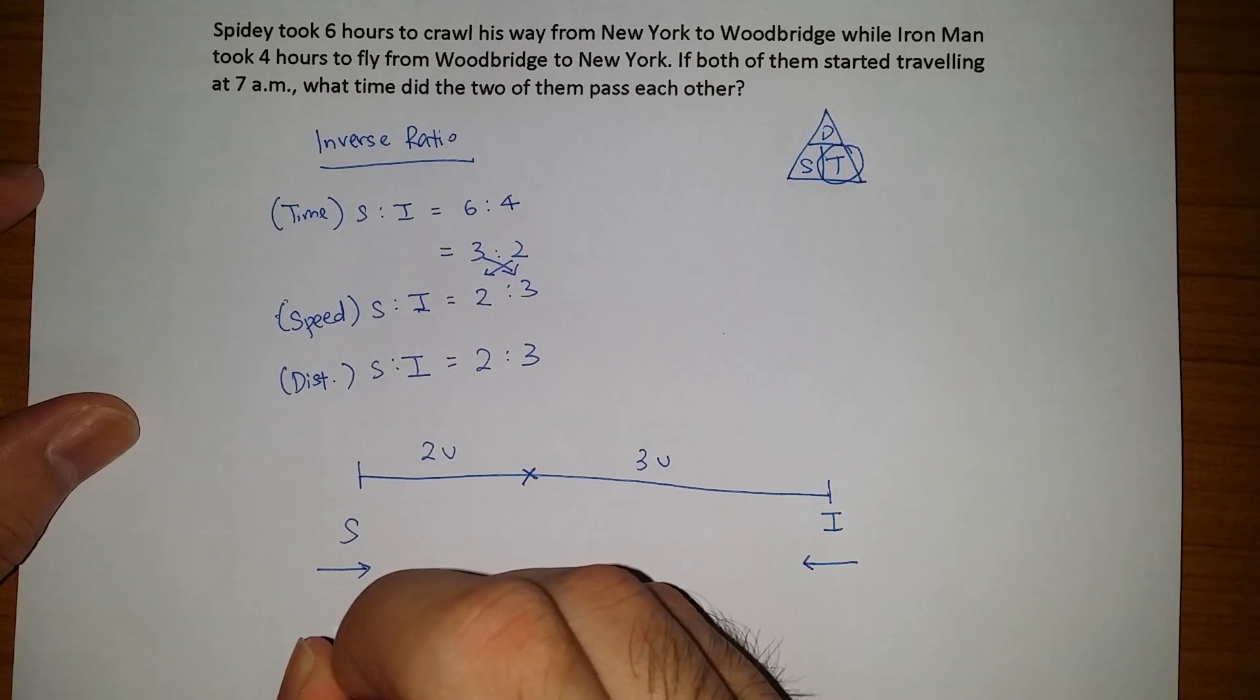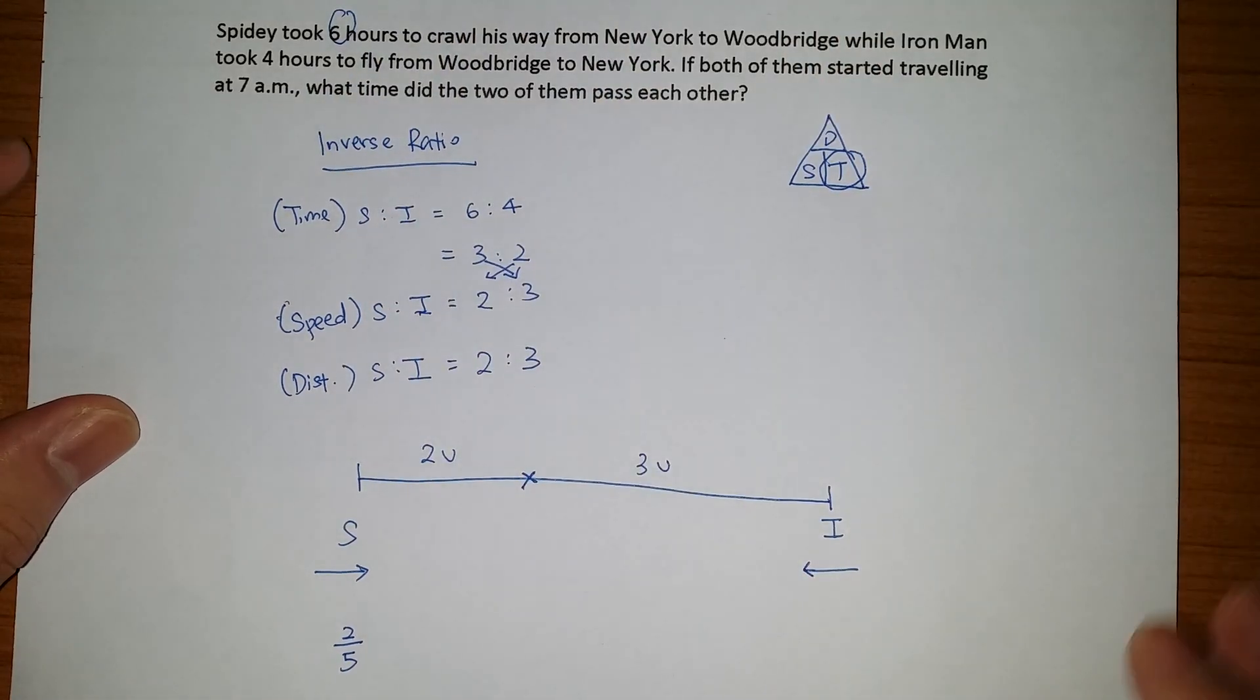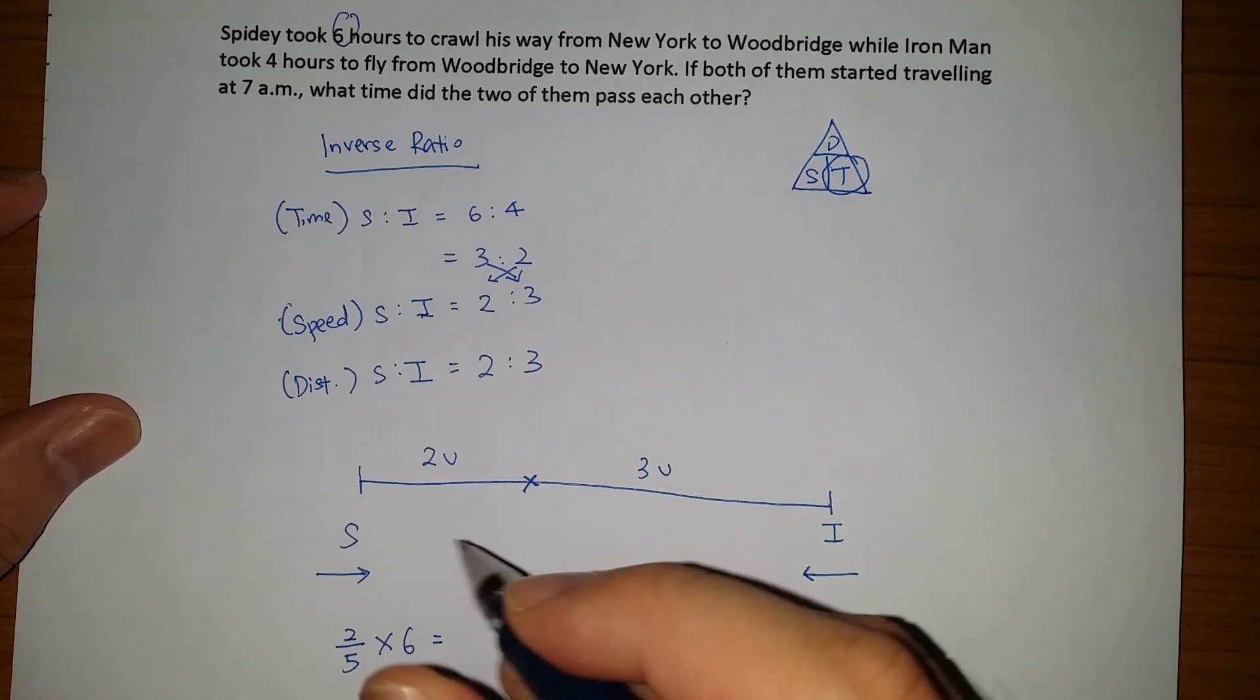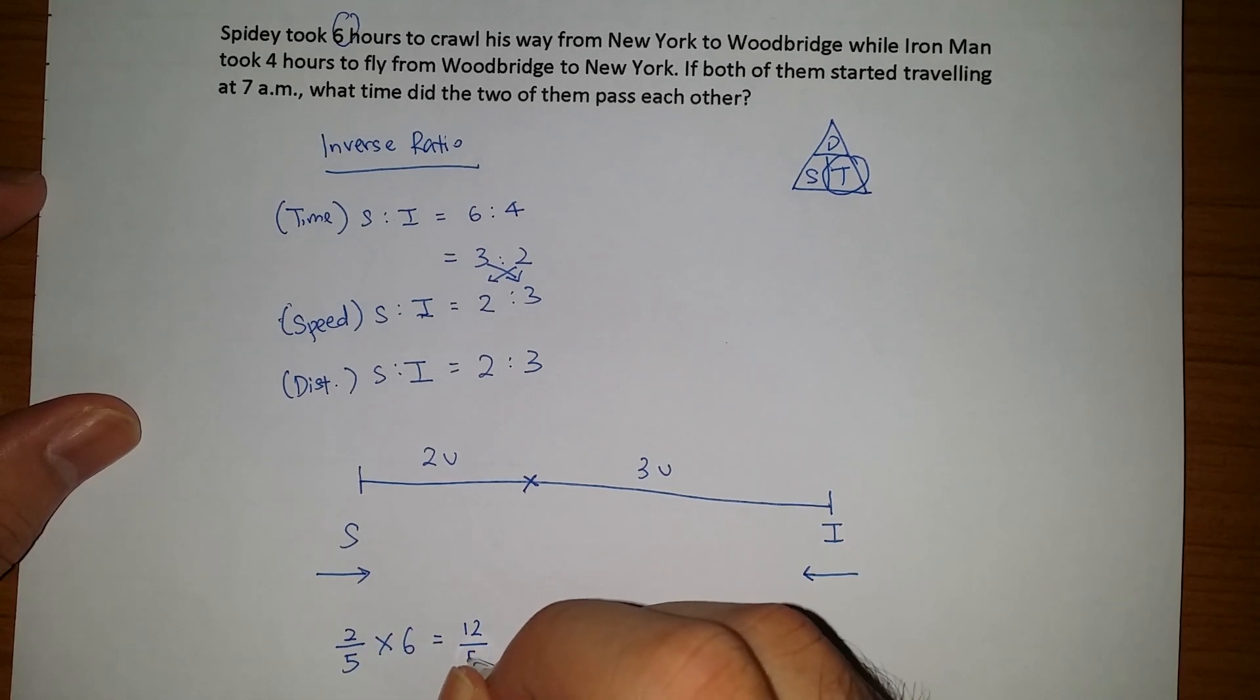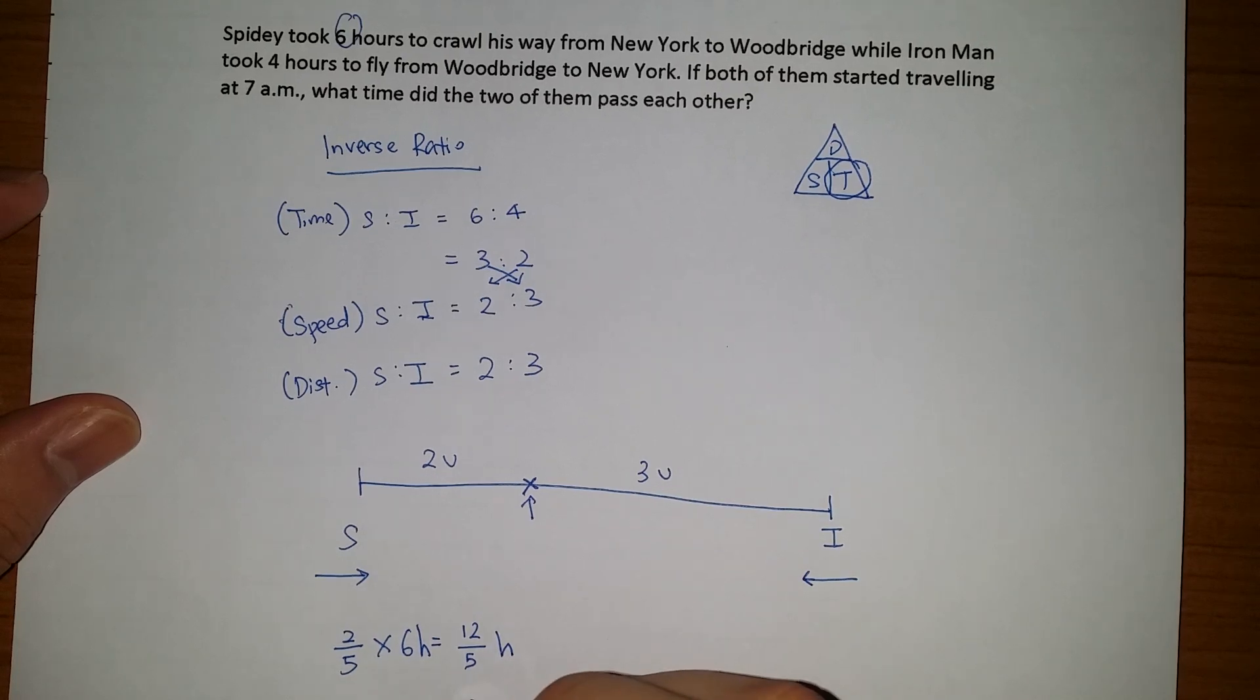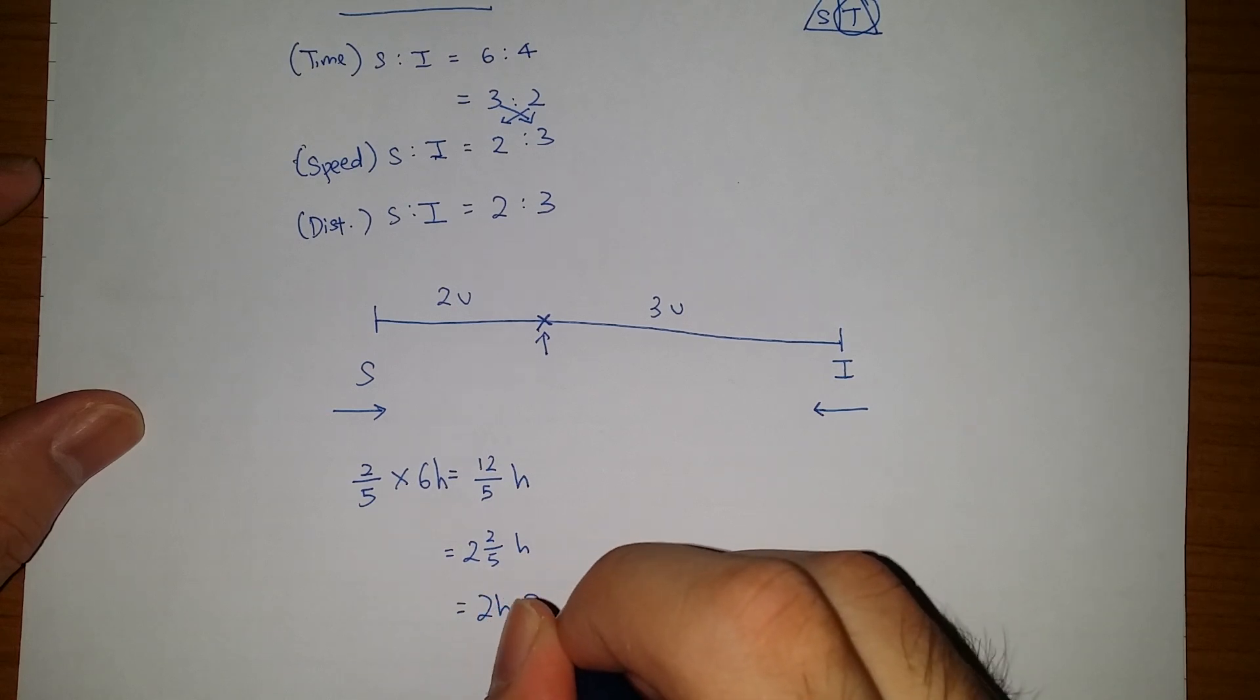Spidey takes 2 units to meet up with Iron Man. So over here what we're going to do now is that 2/5 of Spidey's journey, time taken which is 6 hours. When we multiply this, we get the time taken for Spidey to meet up to reach this point. So this is 12/5 hours because it's 6 hours. 2/5 of this journey is 2 and 2/5 hours. If we make it, we get 2 hours and 24 minutes.